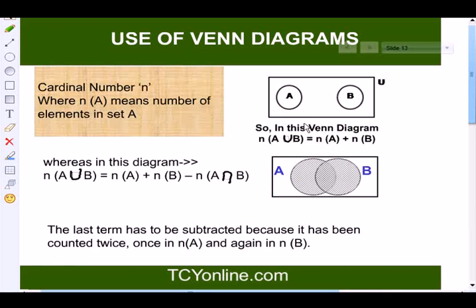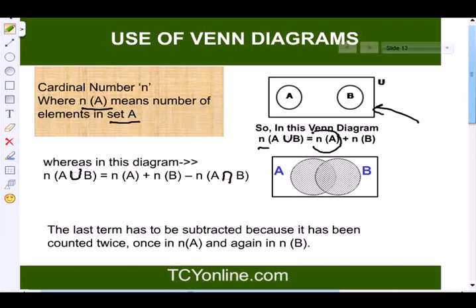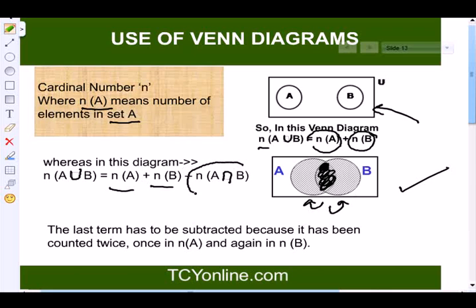Now we define the cardinal number N. N(A∪B) equals the number of elements in set A plus the number of elements in set B minus the number of elements in A intersection B. The last term must be subtracted because it has been counted twice — once in A and once in B — so we subtract A intersection B.